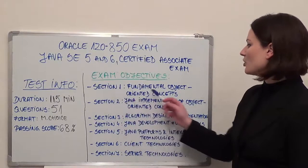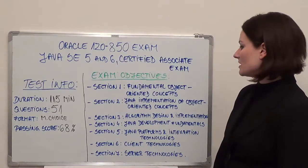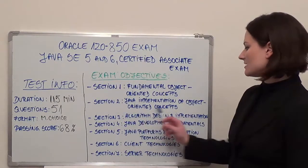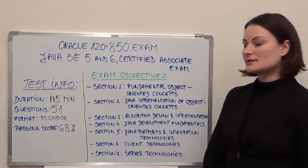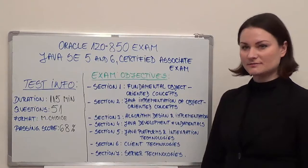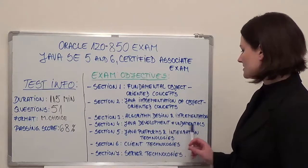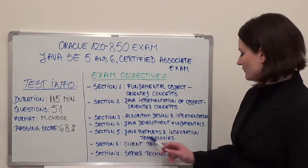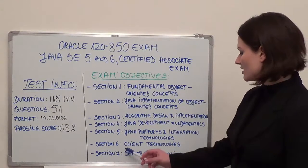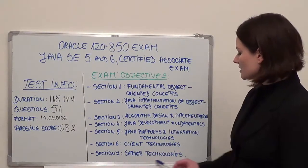Section 1 covers fundamental object-oriented concepts. Section 2 is Java implementation of object-oriented concepts. Section 3 is algorithm design and implementation. Section 4 is Java development fundamentals. Section 5 is Java platform and integration technologies. Section 6 is client technologies. And finally, section 7 is server technologies.